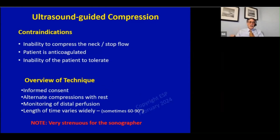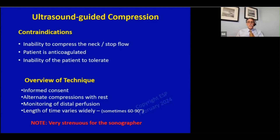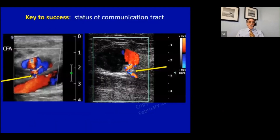Ultrasound-guided compression is where we push it down until it thromboses. We might not be able to do that if we can't push hard enough to stop the flow into it. If the patient is anticoagulated or very tender, we're not going to be able to push. You have to push pretty hard, so this is pretty strenuous for the sonographer. It is a medical procedure - you talk to the physician, the patient should sign an informed consent. We do alternate compressions with rest, monitor distal perfusion, and sometimes it takes an hour or more to get these to thrombose. The key is really the status of that neck or communication track. If it's wide or short, much less likely. If it's long or meandering, particularly if there's already thrombus there, then you're probably going to be able to do this pretty easily.